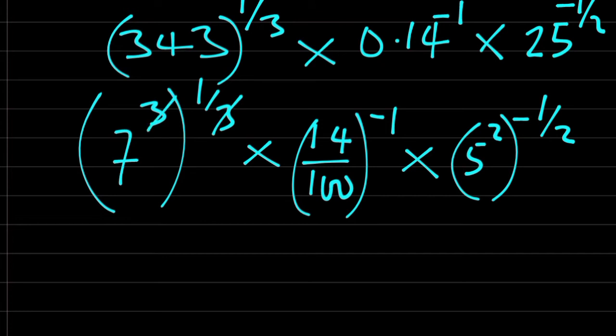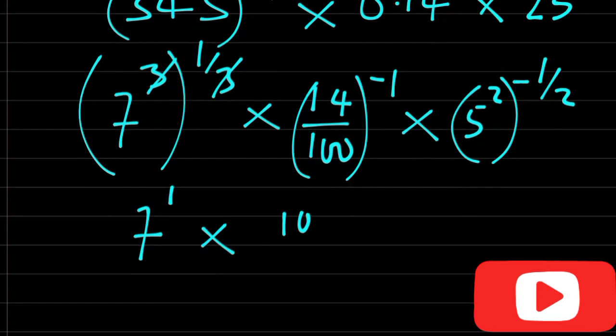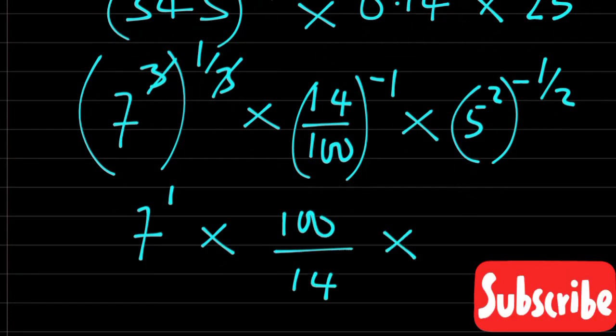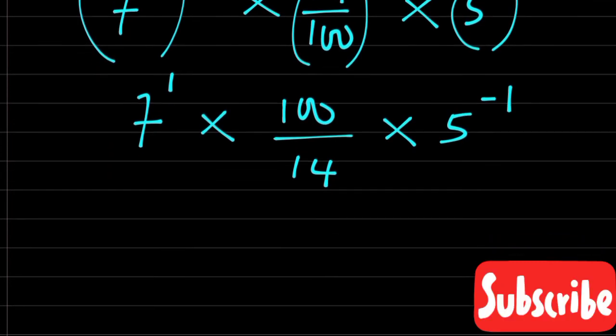3 will cancel 3, therefore I am left with 7 raised to the power of 1, then times 100 over 14. Then times, these two will cancel these two, 5 raised to the power of minus 1.